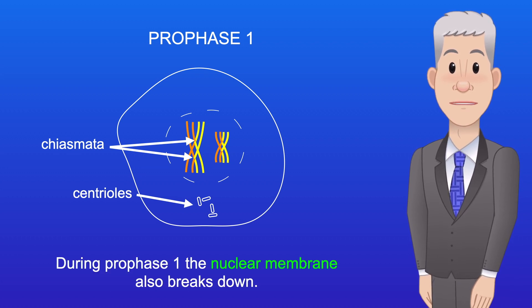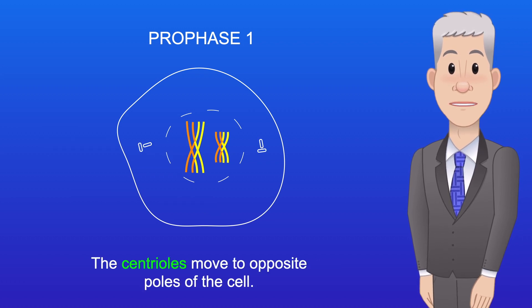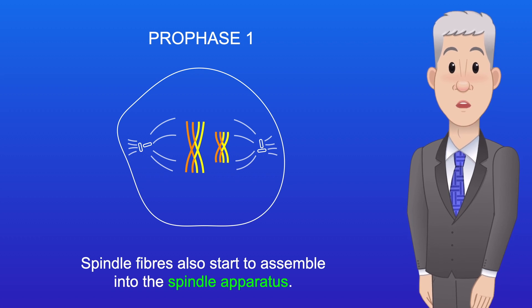During prophase I, the nuclear membrane also breaks down, and the centrioles move to opposite poles of the cell. Spindle fibres also start to assemble into the spindle apparatus.